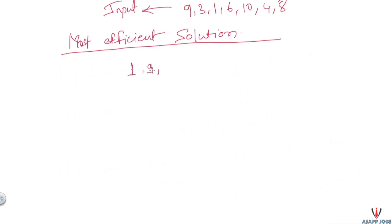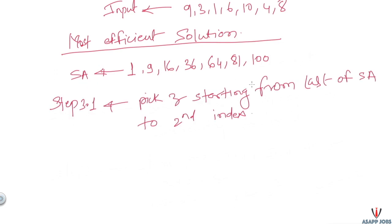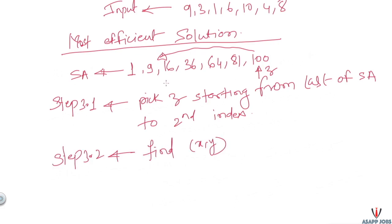Steps 1 and 2 are straightforward, so let's focus on step 3. After executing steps 1 and 2, our array looks like [1, 9, 16, 36, 64, 81, 100] — let's call this the squared array. To search for pair x and y, we first set our z value starting from the last index of the squared array, and it will iterate down to the second index. Initially, x points to 1 and y points to 81.